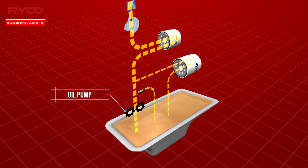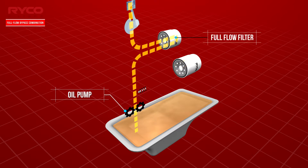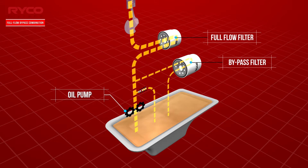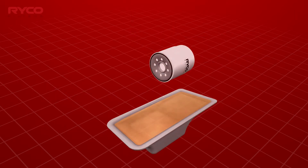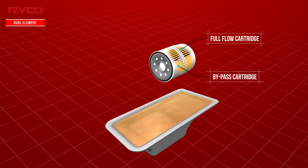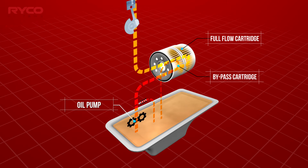Some vehicles use a full flow and bypass combination oil system that requires two separate filters. These systems are primarily seen in heavy commercial vehicles as they provide the best possible protection for an engine. The majority of oil passes through the full flow filter which removes large particles, with a small quantity of oil metered through the bypass filter that traps and removes extremely small particles and impurities not removed by the full flow filter. A dual element filter assembly contains two separate elements mounted within the same case, functioning as a two-stage filter containing both a full flow and a bypass element.